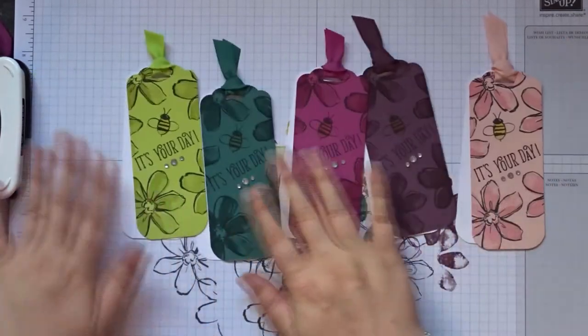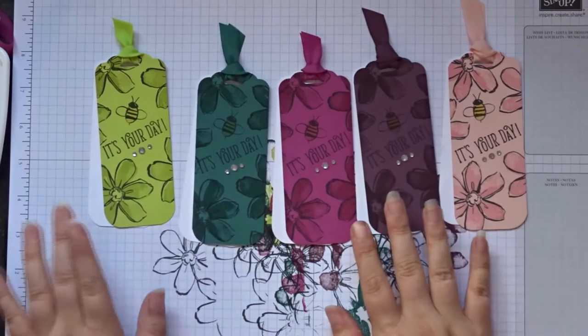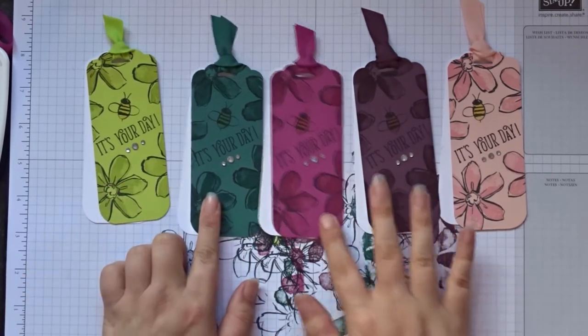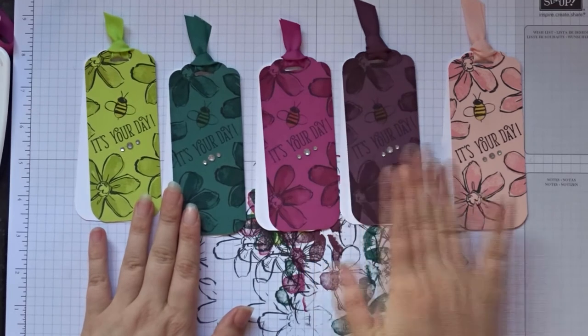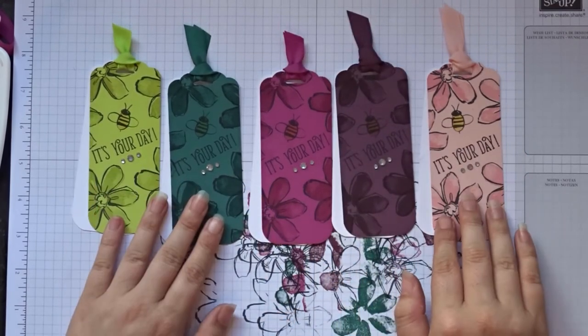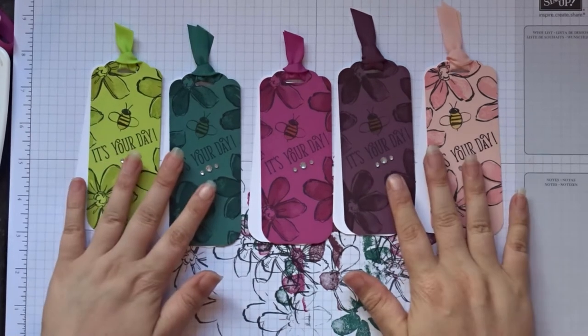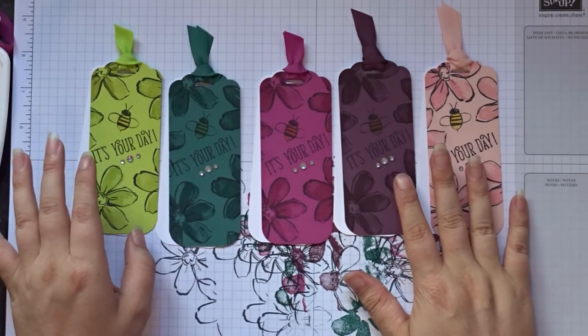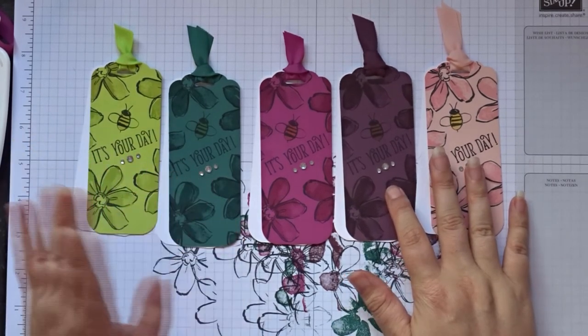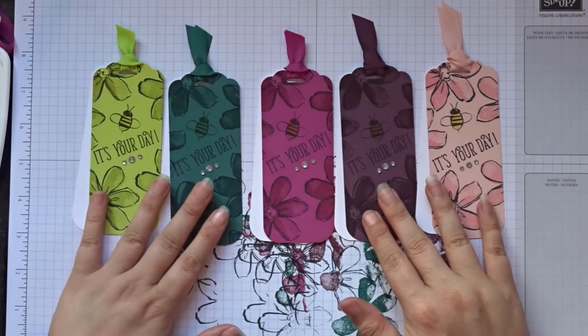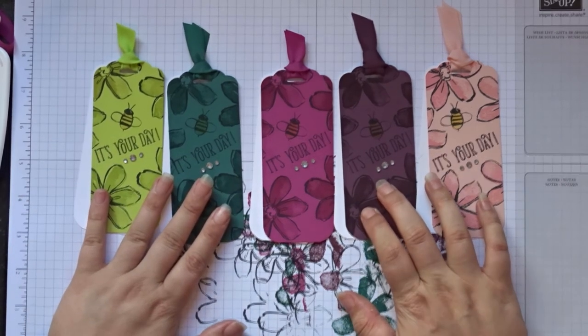And there we have it. There are five gorgeous little gift tags using our new ink colors. That is Lemon Lime Twist, Tranquil Tide, Berry Burst, Fresh Fig, and Powder Pink. Thank you for watching guys. Please give this a thumbs up if you liked it and please subscribe. All the details below will be posted on the blog as well as where you can buy all these items from. Talk to you soon. Bye.